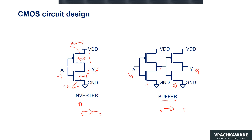Sometimes we show an extra input, which is called the enable input. When enable is active, the circuit is active. When enable is at logic 0, the circuit is not active.